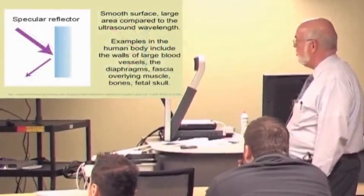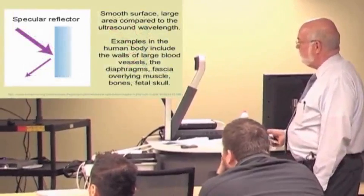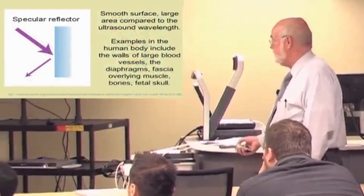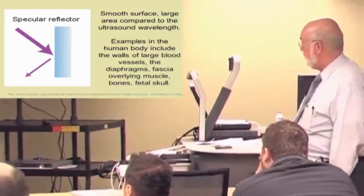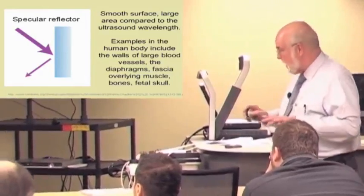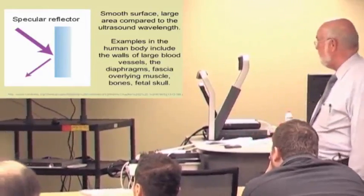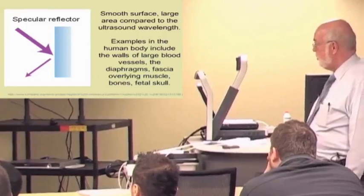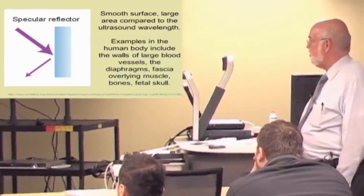So specular reflectors generally smooth surface in a large area compared to the wavelength we're using, and that's basically almost any organ in the body, liver. I'm sorry, that's not true at all. It's the large flat surfaces like the walls of the large blood vessels, the fascia overlying the muscle, bones, including fetal bones and fetal skull.